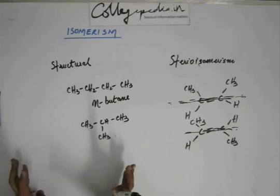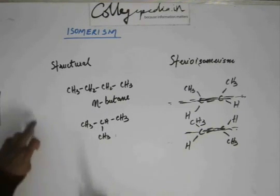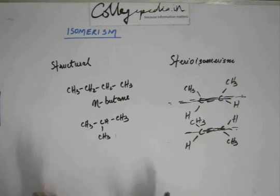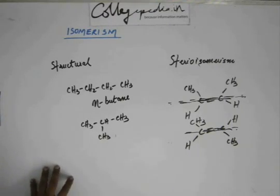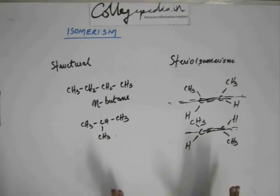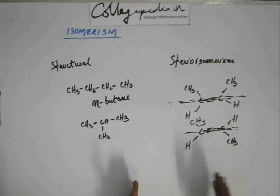If the connectivity changes, that will lie in the category of structural isomerism. That's the basic difference. Structural isomerism will be easy to analyze and quite rudimentary. The major chunk of isomerism is stereo isomerism, and there will be various kinds of stereo isomerism.